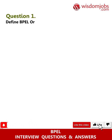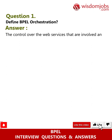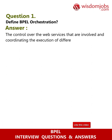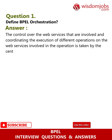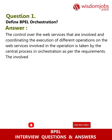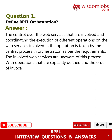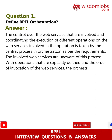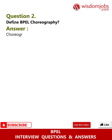Question 1: Define orchestration. Answer: The control over the web services that are involved, and coordinating the execution of different operations on the web services involved in the operation, is taken by the central process in orchestration. As per the requirements, the involved web services are unaware of this process. With operations that are explicitly defined and the order of invocation of the web services, the orchestration is centralized.